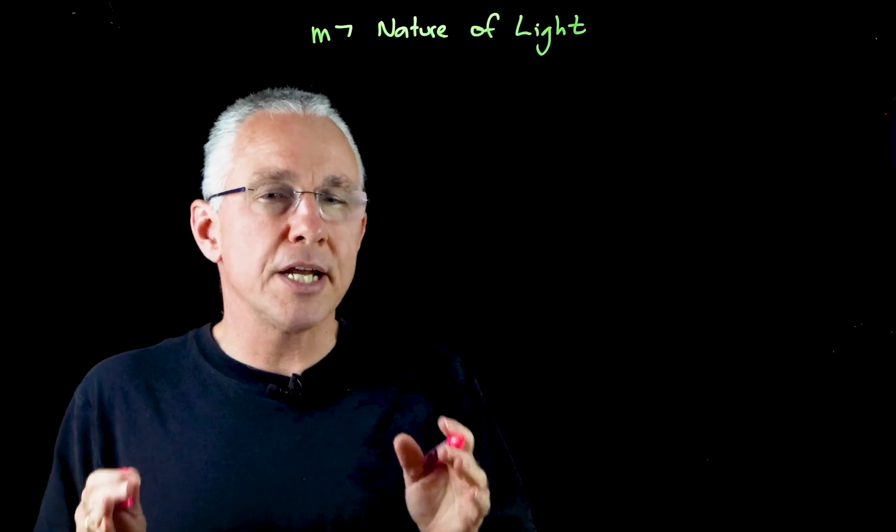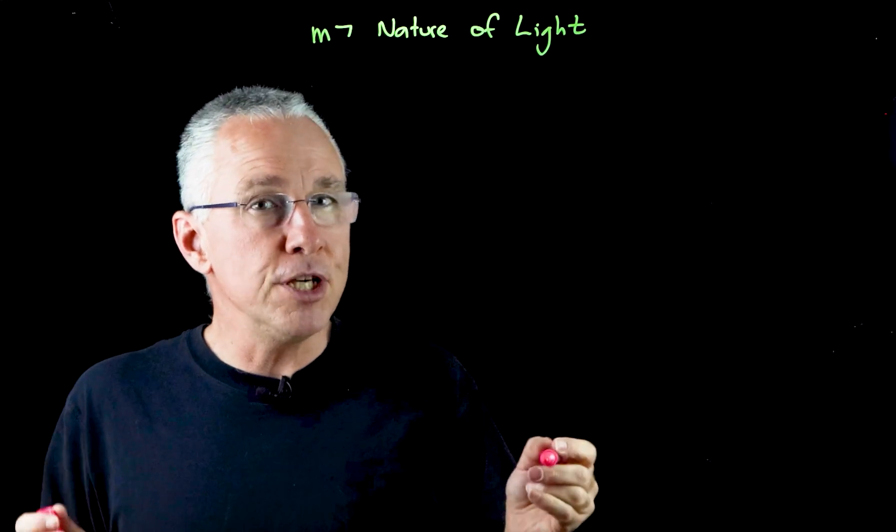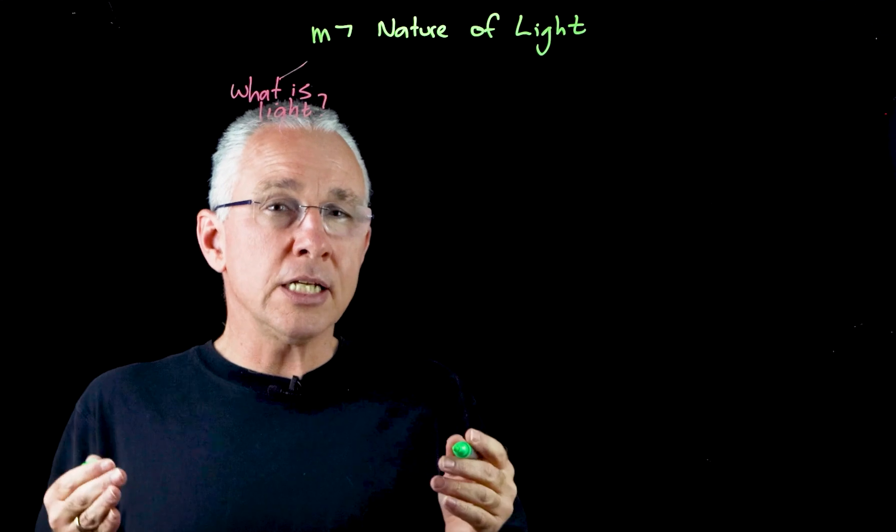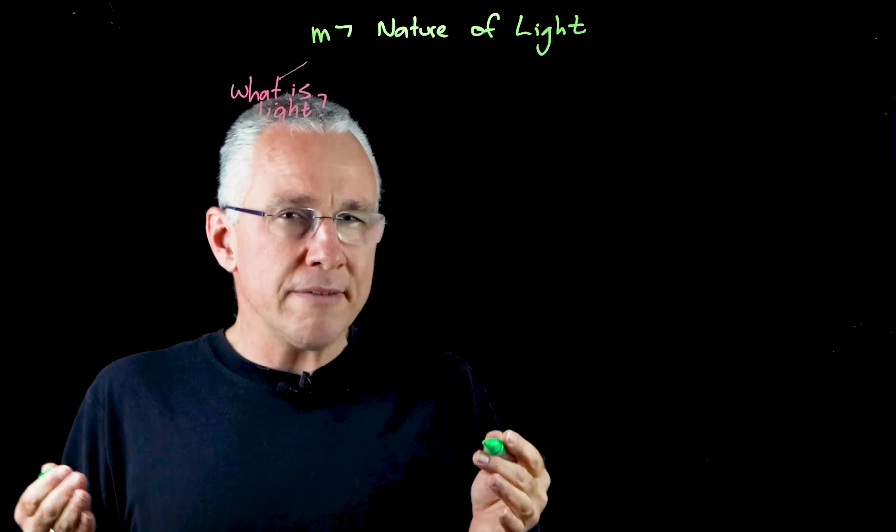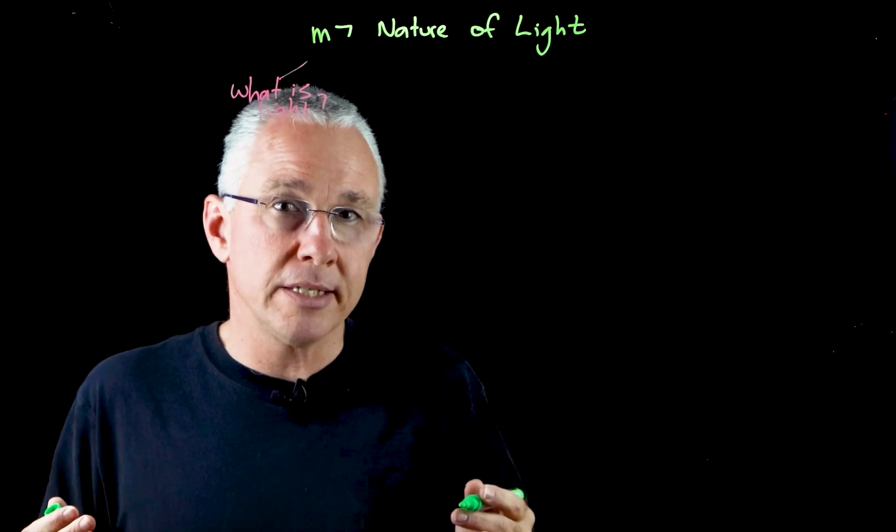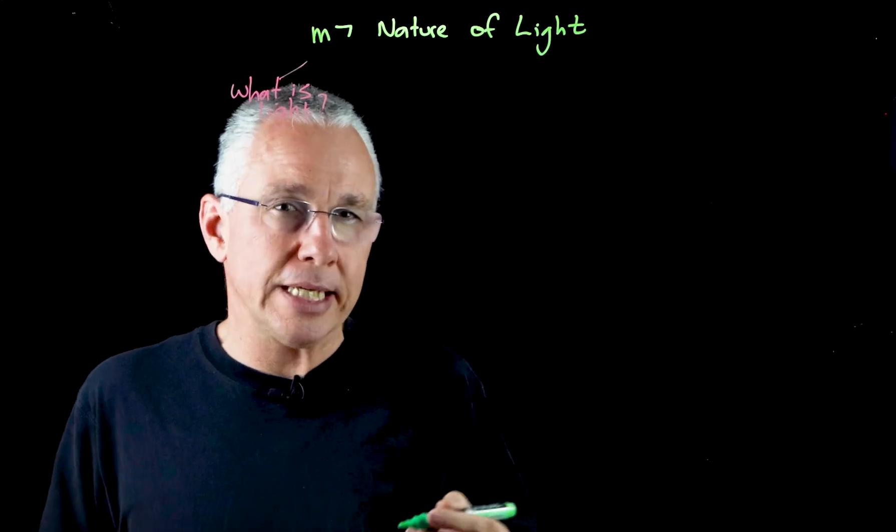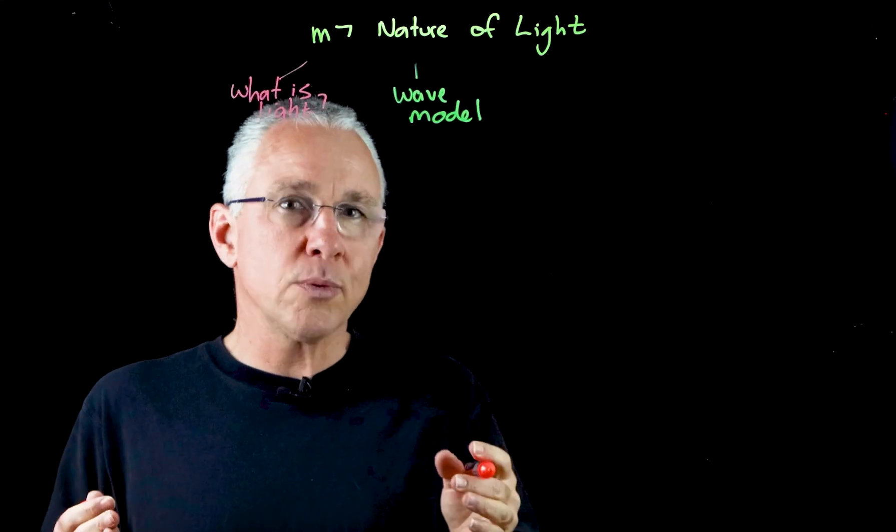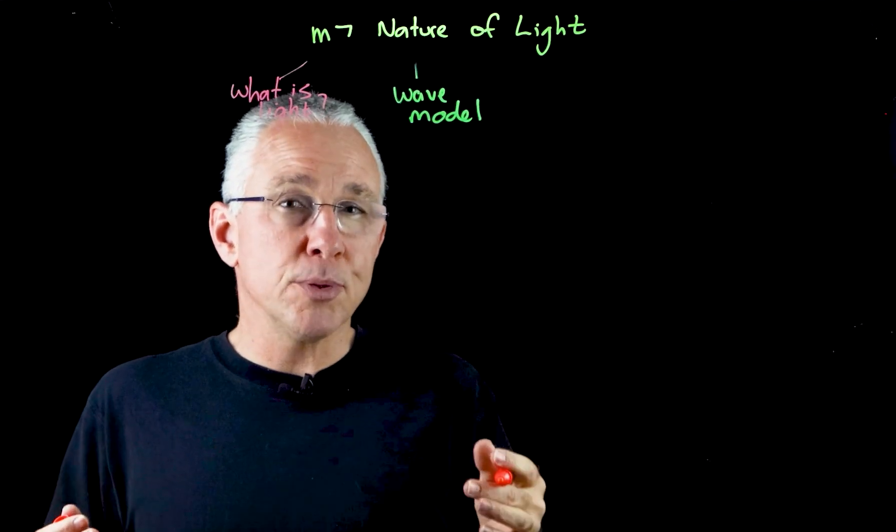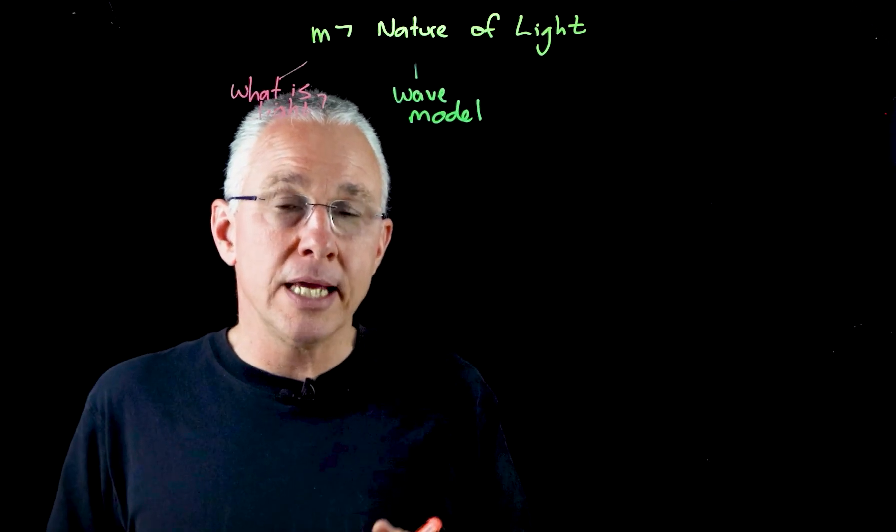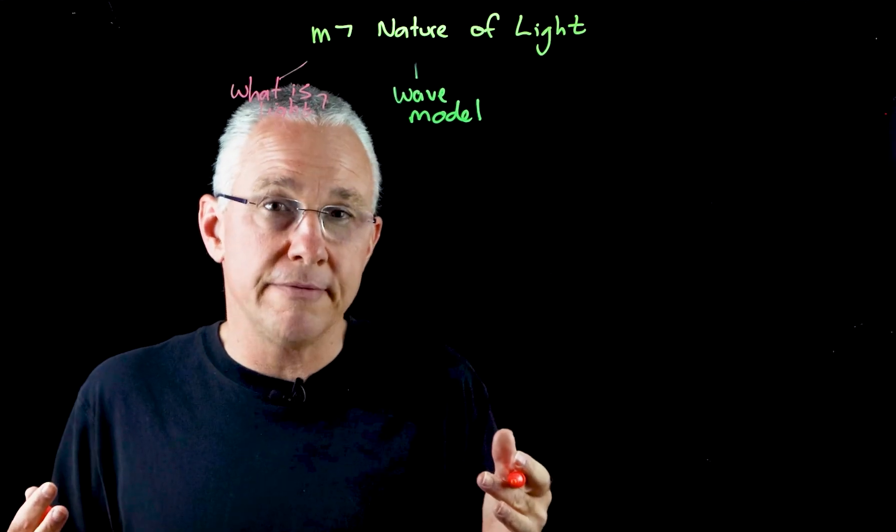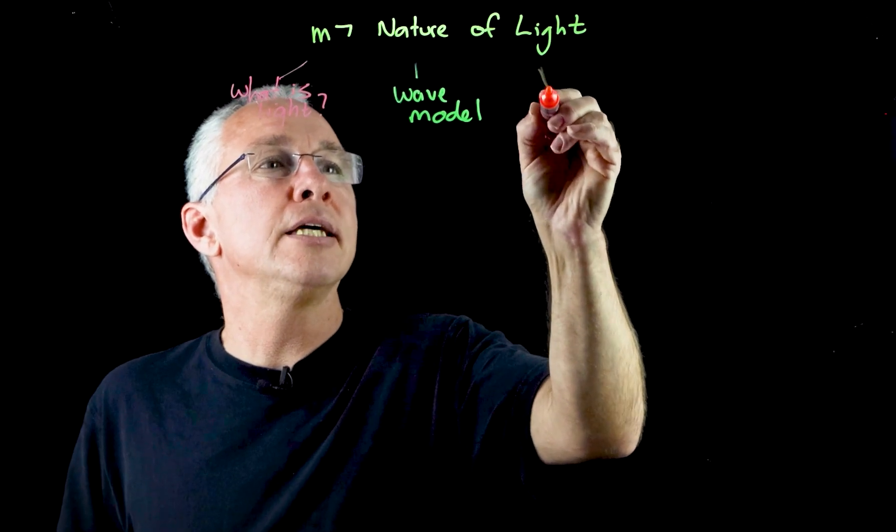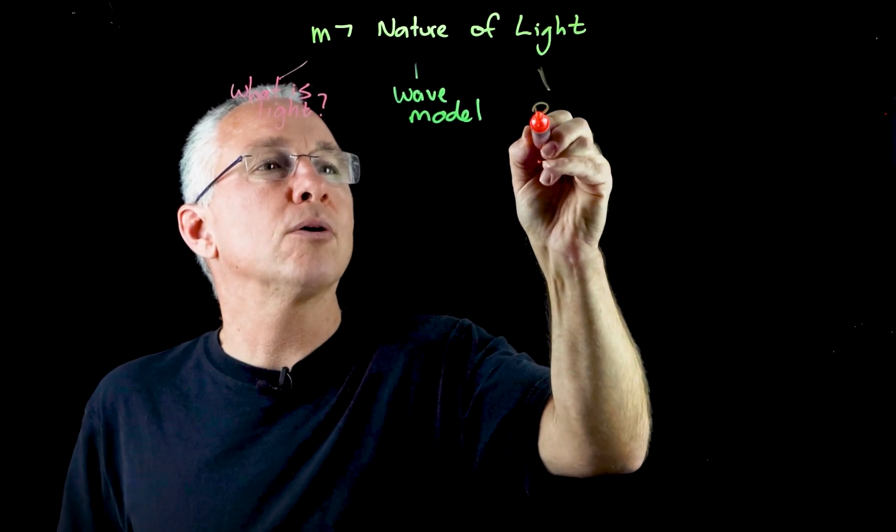Now this module is divided up into four inquiry questions. The first one is looking at what is light. The second inquiry question says what evidence supports the wave model of light and what predictions can be made using this model. In essence we're interested in the wave model. The next question says what evidence supports the particle model of light and what are the implications of this evidence for the development of the quantum model of light. In essence we are interested in what we refer to as the particle model.